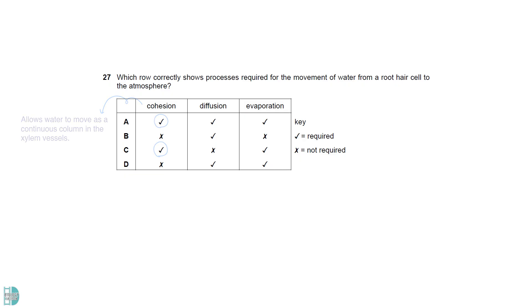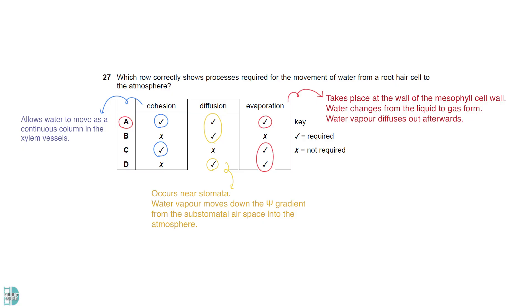Cohesion allows water to move as a continuous column in xylem vessels. Diffusion of water vapor occurs near the stomata. Water vapor moves down the water potential gradient from the substomatal airspace into the atmosphere. Evaporation takes place at the wall of the mesophyll cell wall. Water changes from the liquid to gas form. Water vapor diffuses out afterwards.